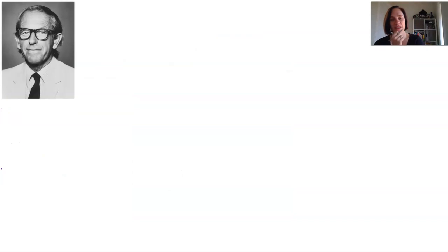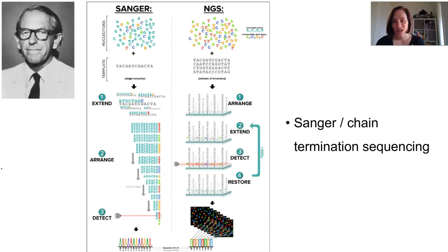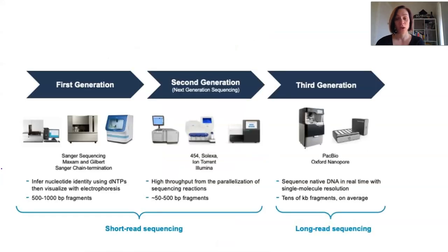The method of sequencing just described is called chain termination sequencing, or the Sanger method, after the scientist who created it. Progress means we're now using next generation sequencing, which takes advantage of many other tools and technologies that have developed since. Next gen sequencing allows the entire genome to be sequenced simultaneously and speeds up the process significantly. We're also now pushing into the third generation of sequencing methods as technology progresses.